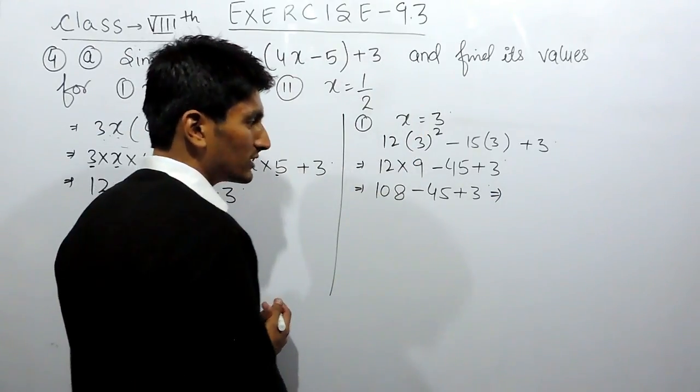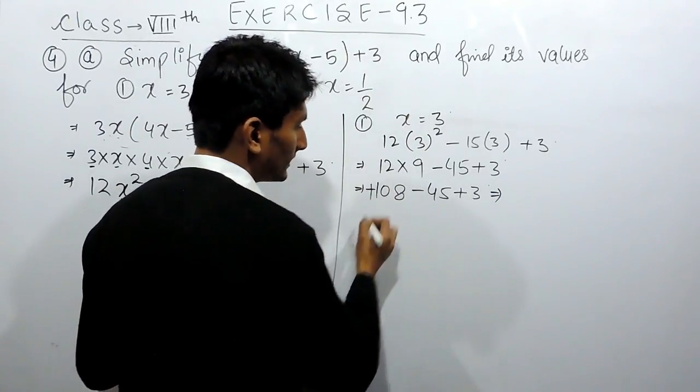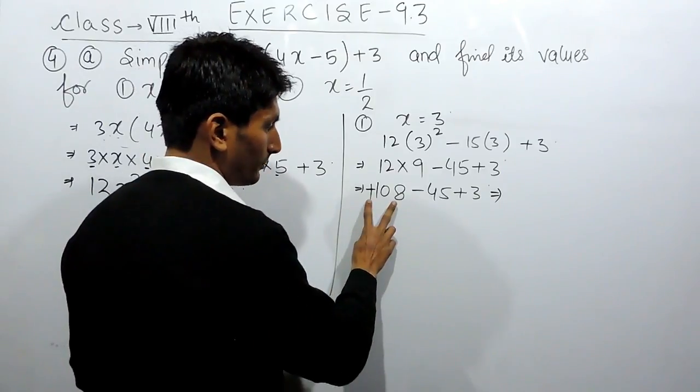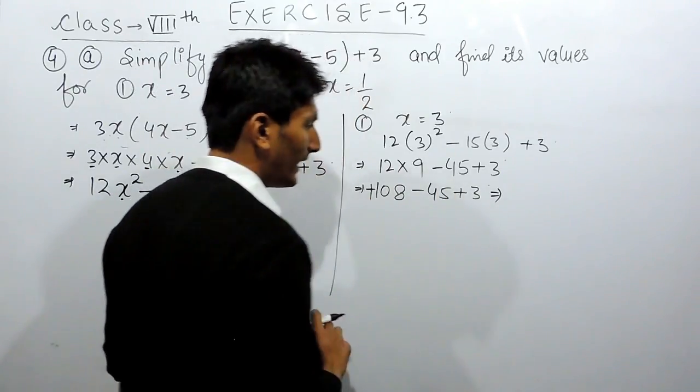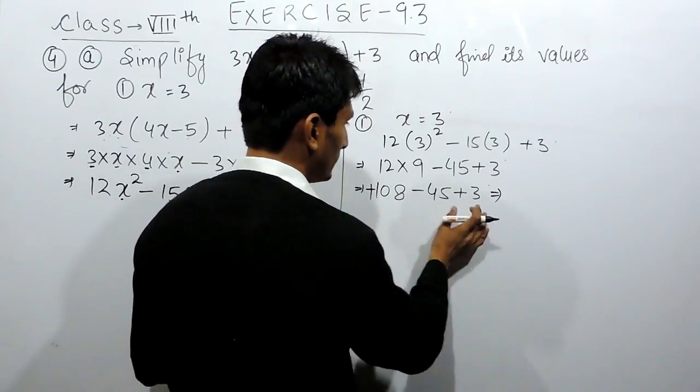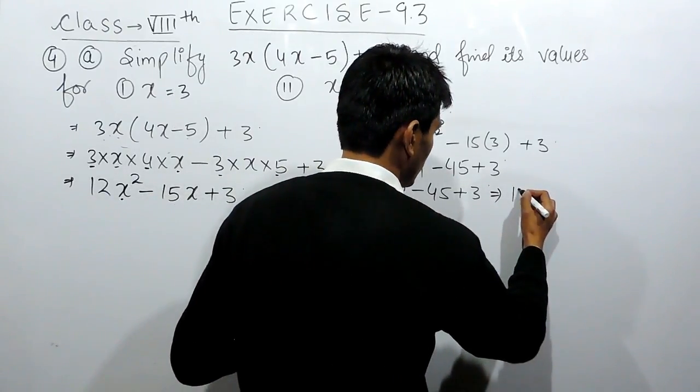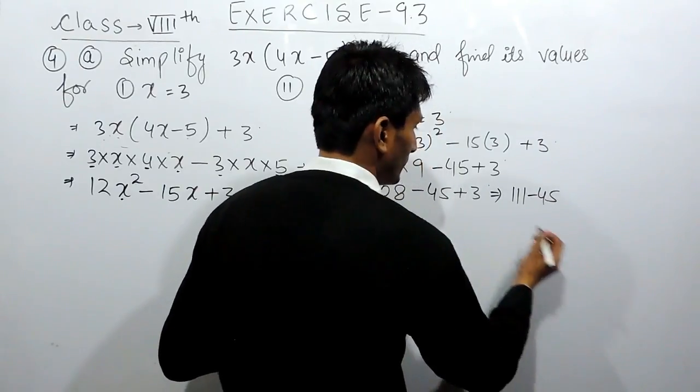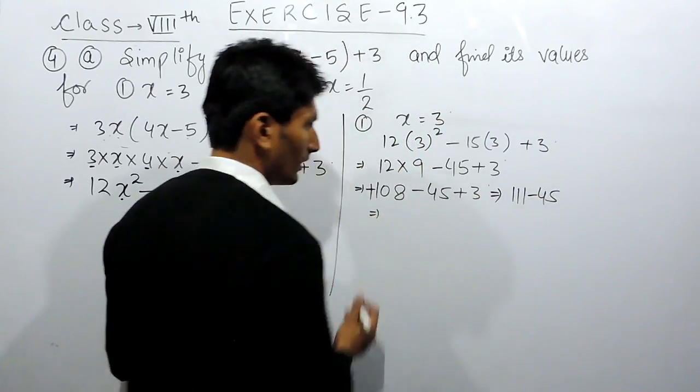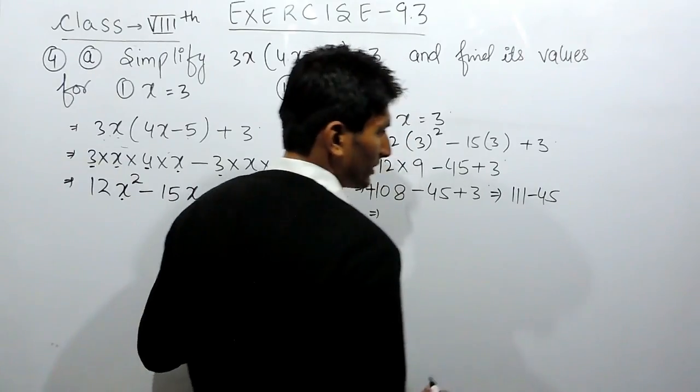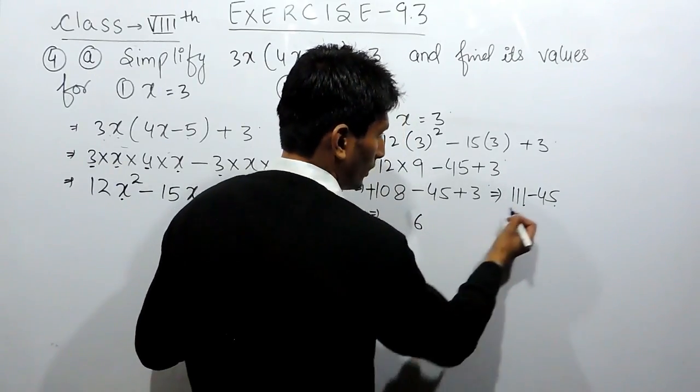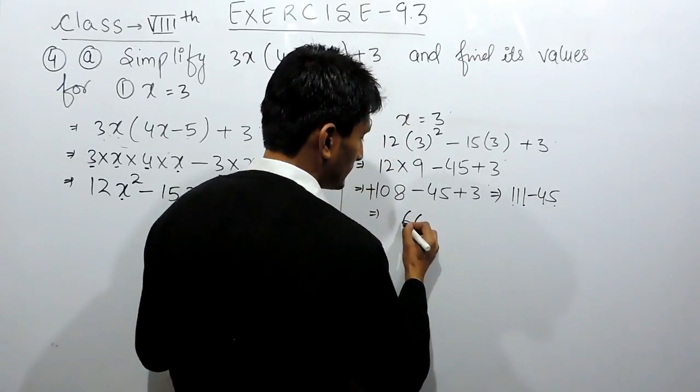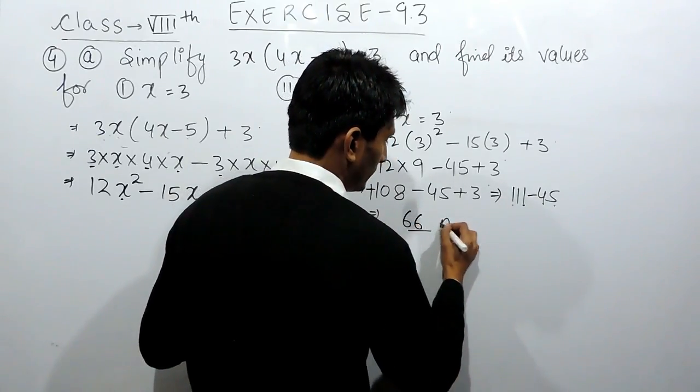According to BODMAS, we have to add first. For that, we have to add the numbers. The sign before them is plus, so this value and this value will be added. 108 plus 3 is 111 minus 45. 111 minus 45 will be, this is 11 minus 5 is 6 and 10 minus 4 is 6. So 66 will be the answer.